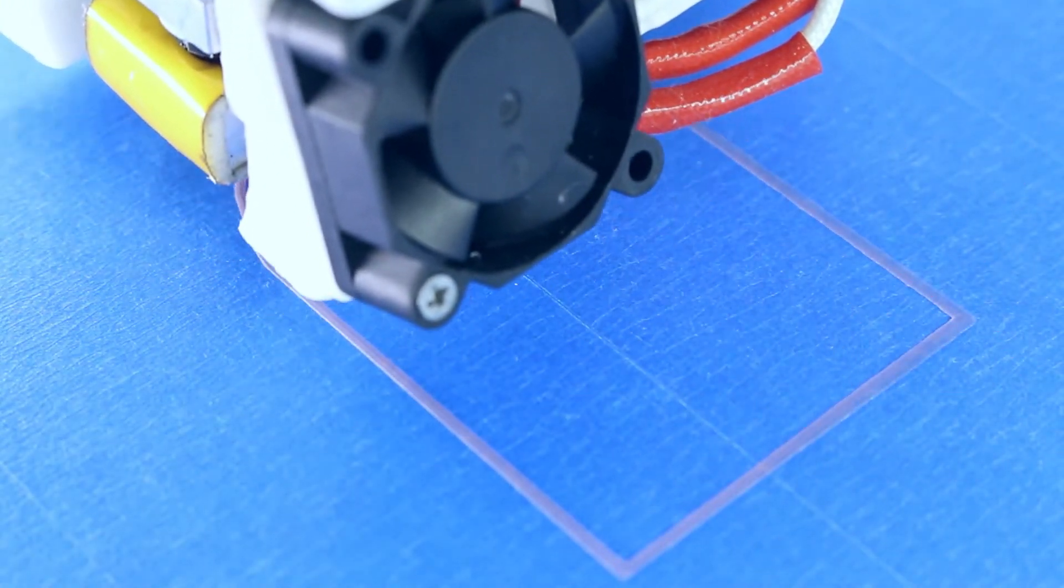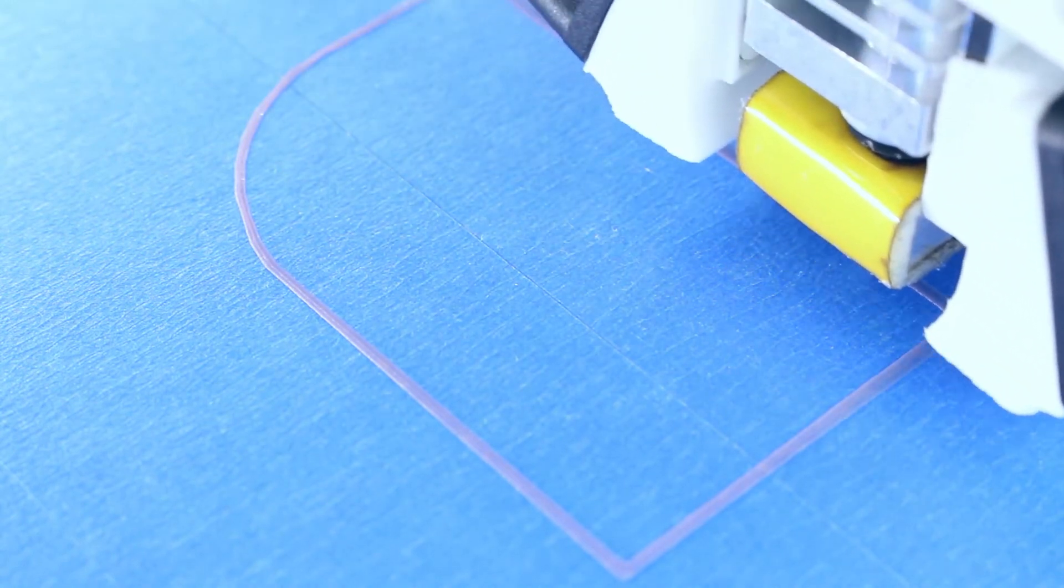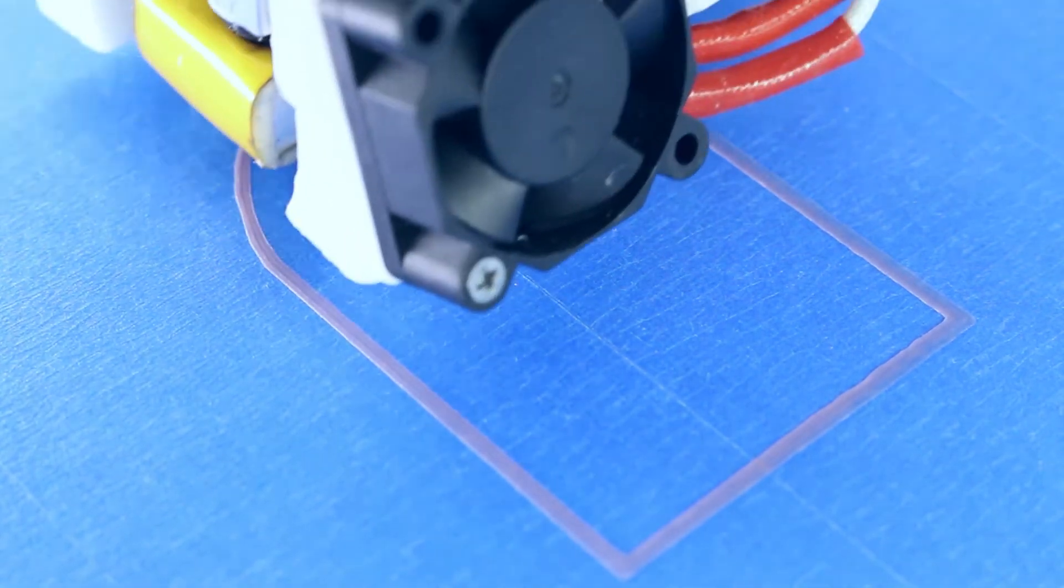Then the printer will lay down loops around the print, and this is called a skirt. This is the best time to check if your print surface is properly calibrated. You can find the print surface calibration video on the right side of the video.